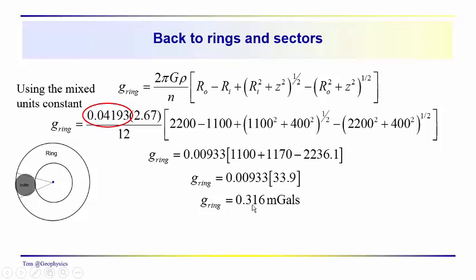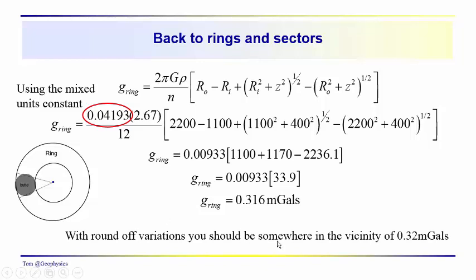With n equal to 12, making the substitution using our mixed-units constant, leaving density in grams per cubic centimeter and radii and thicknesses in meters, we end up with the acceleration due to gravity for one twelfth of the ring. It turns out to be 0.316 milligals — with rounding, about 0.32 milligals. Depending on the precision of your survey, if the anomalies you're looking for are on the order of a milligal, you want to remove topographic or terrain influences like this 0.32 milligal effect.